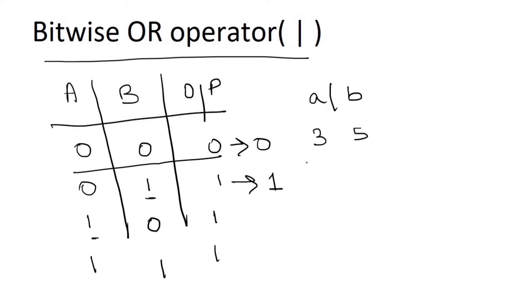Let me write the binary equivalent of 3. It is written like 8, 4, 2, 1 since 2 to the power n where n starts from 0. 2 to the power 0 is 1, 2 to the power 1 is 2, and so on. For 3 it is 0011, and for 5 it's 0101.